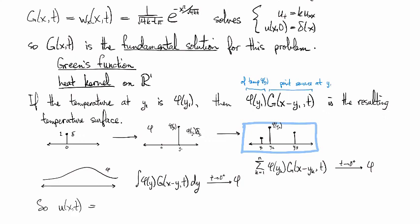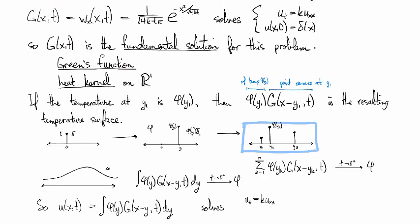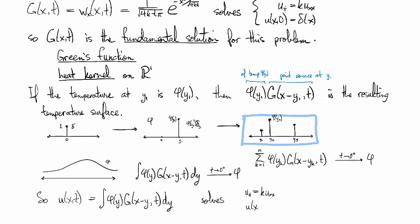So our final solution for a given initial condition phi is the integral of phi against the heat kernel. Now this is an integral representation. So it might need to be crunched numerically for a given application. But that still allows you to solve the Cauchy problem for the heat equation with any initial conditions whatsoever.